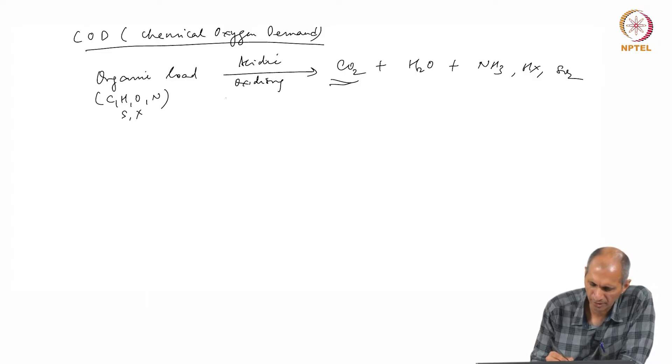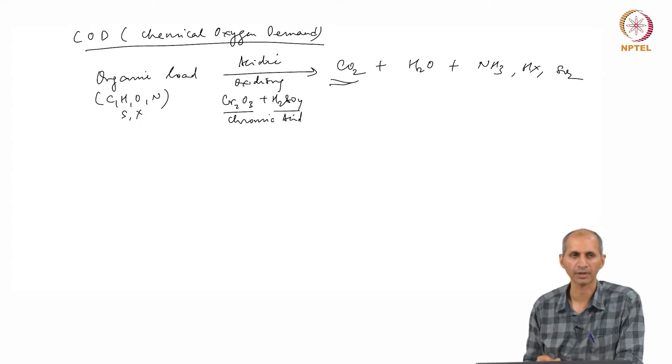Strong acid is used. One method, standard method, calls for the use of CR2O3 plus H2SO4. It is called chromic acid—chromium trioxide with concentrated sulfuric acid.